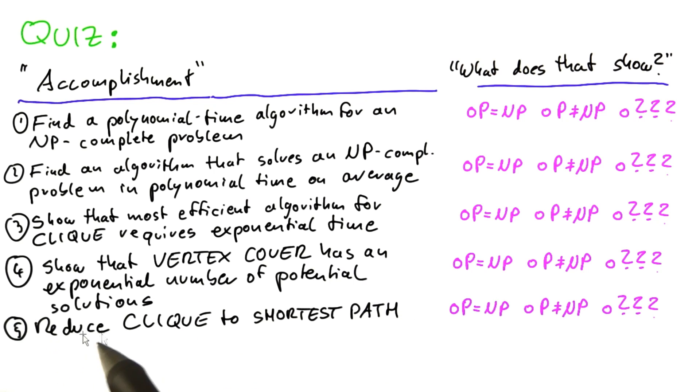What if you were able to reduce the clique problem to the shortest path problem? Shortest path is finding the shortest path between two vertices in a graph.